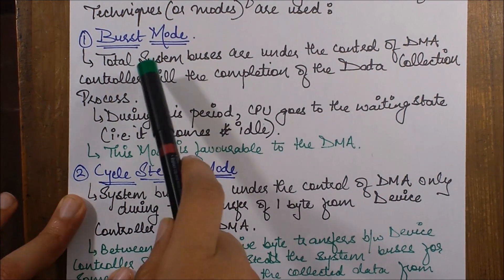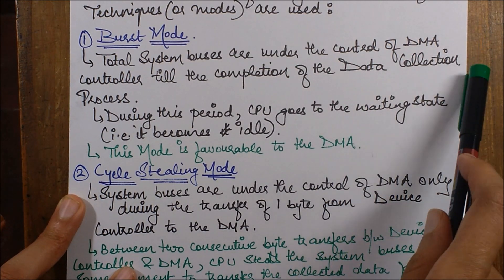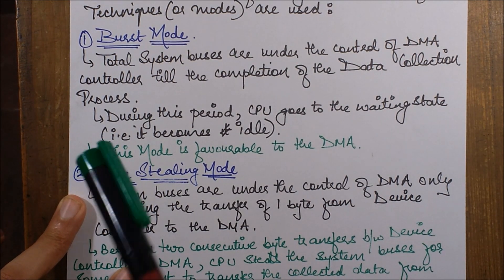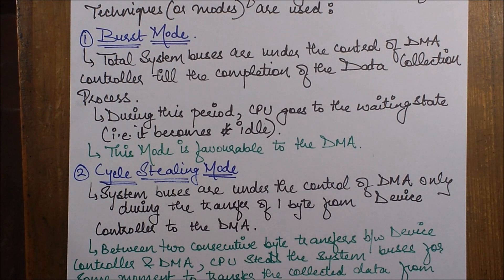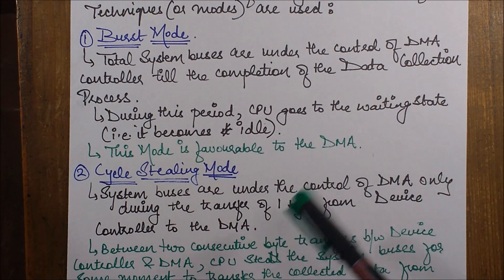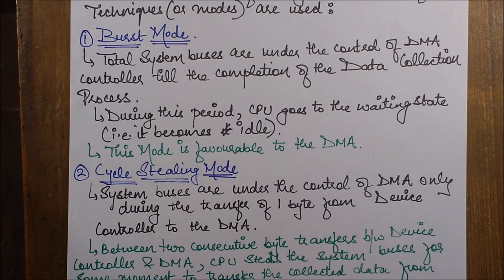In burst mode, all system buses are under the control of DMA until the completion of the data collection process. During this period, the CPU goes into a waiting state — it is simply idle until the entire process completes.